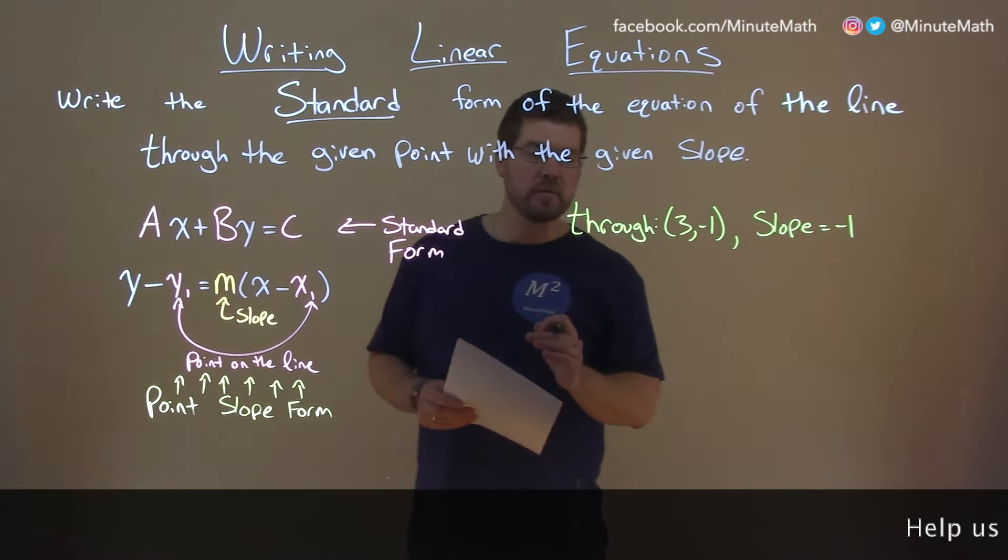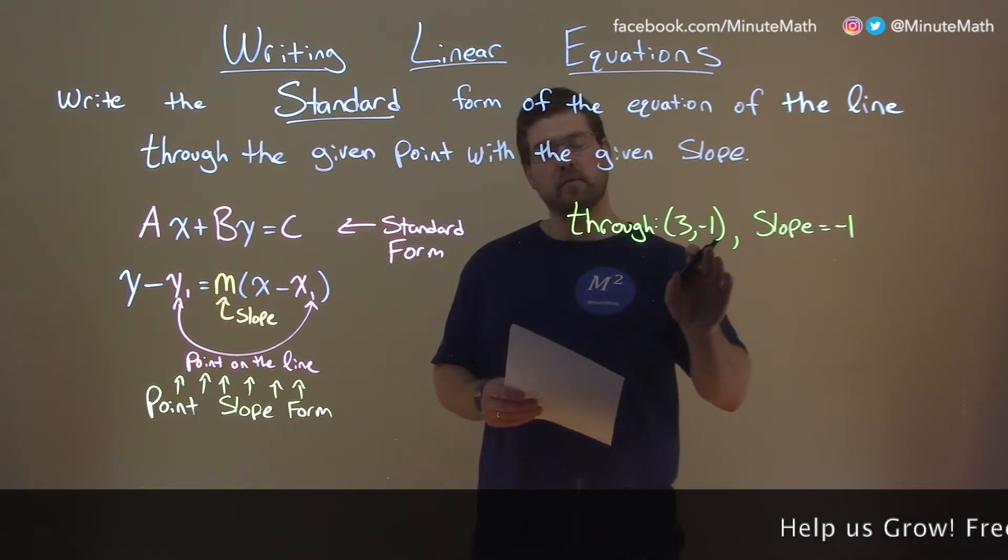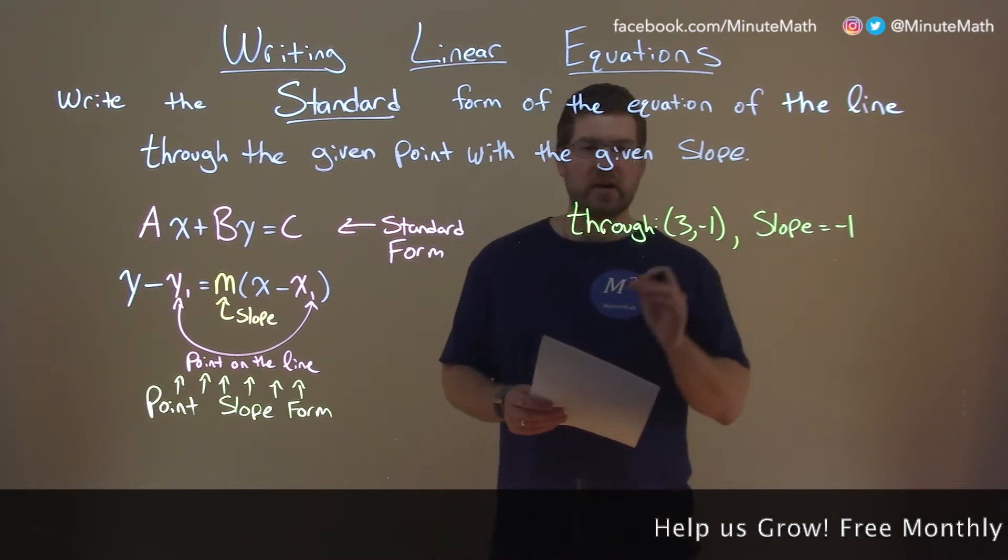If I was given this problem: through (3, -1) and our slope is negative 1,